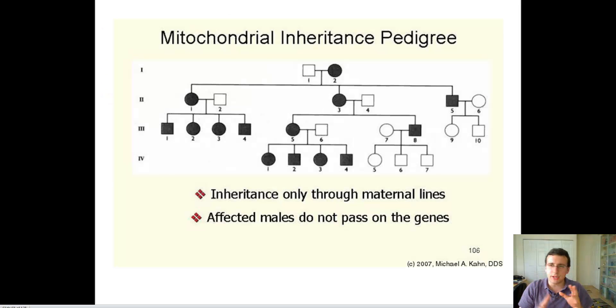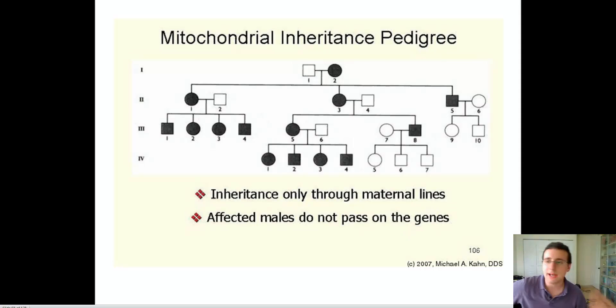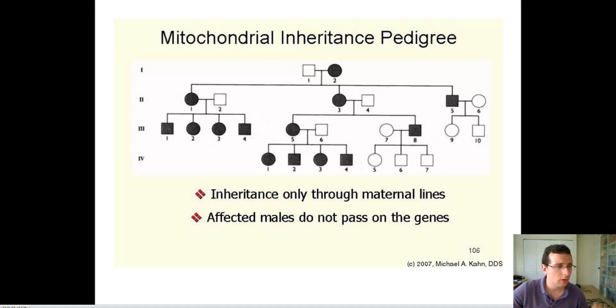Now, here's another kind of pedigree that sometimes they throw at you, and in addition to that incomplete penetrance one, there's another one that can confuse students, and I want to try to make sure you don't get caught by that one. It's called mitochondrial inheritance pedigree.